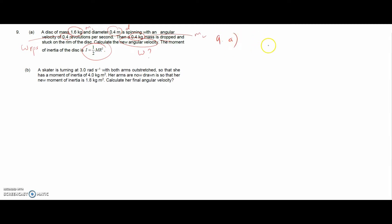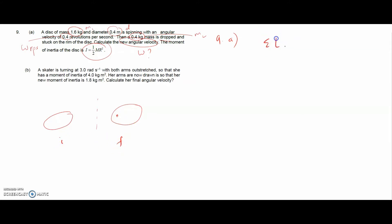For question 9a, we will use the conservation of angular momentum. We use this because the disc is spinning and then something is dropped onto it, so the mass changes and therefore the angular velocity also changes. This is the initial state and this is the final state.